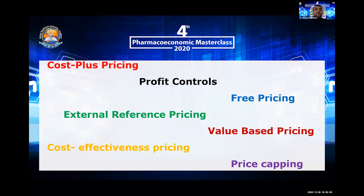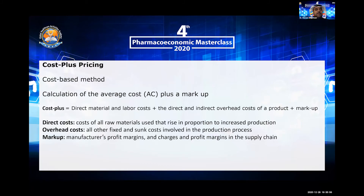Some of them include cost-plus pricing, which is a very primitive way to price pharmaceuticals. External reference pricing, free pricing, profit control, value-based pricing, cost-effectiveness pricing, and so on. I will start with the most simple concept: cost-plus pricing. It is a cost-based method. The formula is: cost-plus equals direct material and labor costs, plus direct and indirect overhead costs of the product, plus markup.